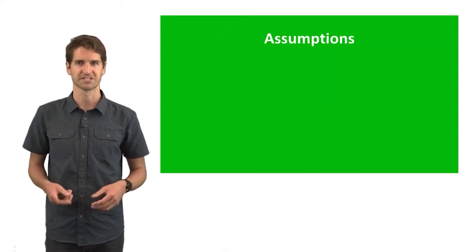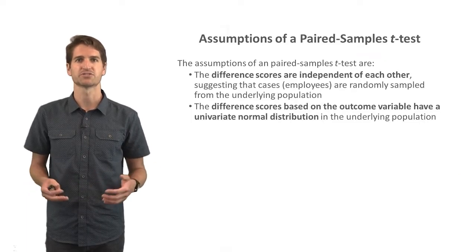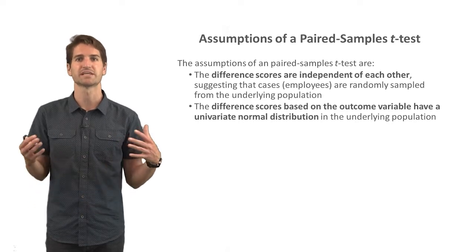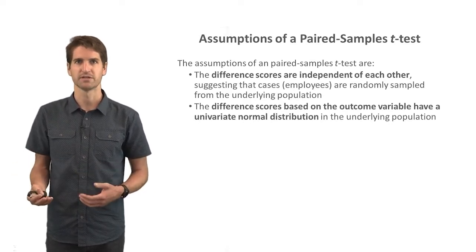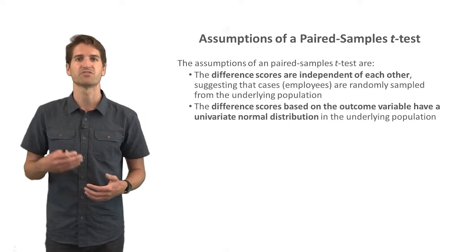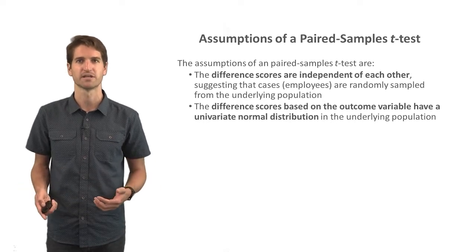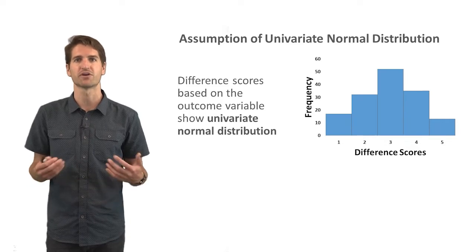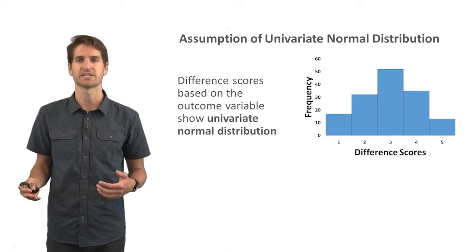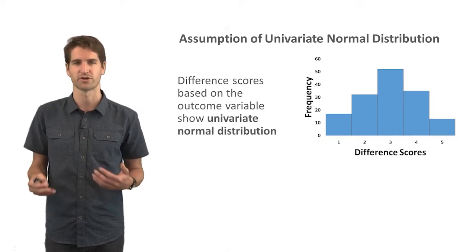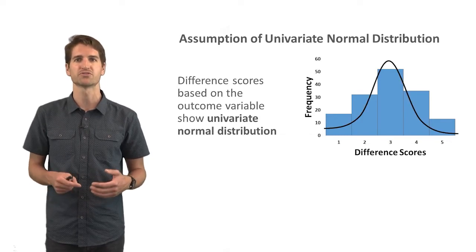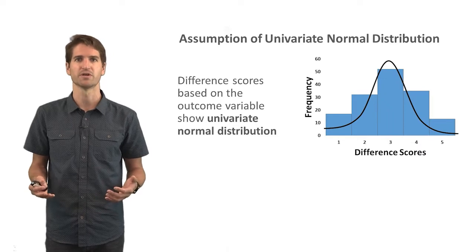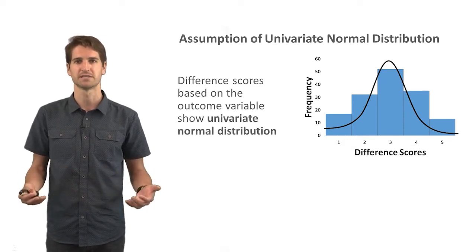The statistical assumptions of a paired samples t-test are as follows. First, the difference scores are independent of each other, suggesting that cases are randomly sampled from the underlying population. Second, the difference scores based on the outcome variable have a univariate normal distribution in the underlying population. Using a histogram, we can see what appears to be a relatively normal, bell-shaped distribution of difference scores, which would visually illustrate that this assumption is met.